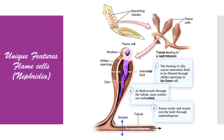When these cilia beat, body fluid enters these slits and then travels through these tubules to the nephridiopore. As the body fluid travels through the tubule, most of the useful solutes like glucose, amino acids, minerals, etc., are reabsorbed into the body fluid, and the remaining fluid, rich in nitrogenous waste, exits the body through the excretory pore or nephridiopore. These cells are called flame cells because when their cilia beat, they appear like a flickering flame of a candle.